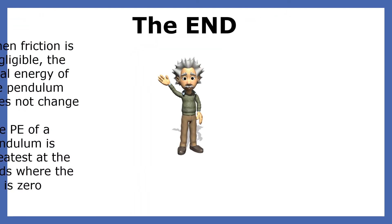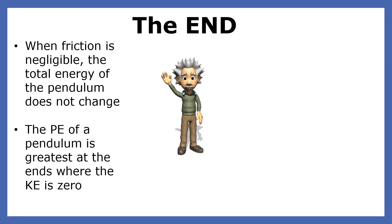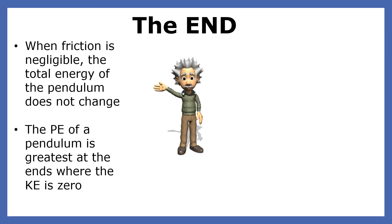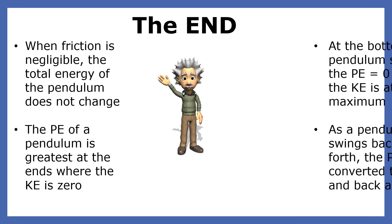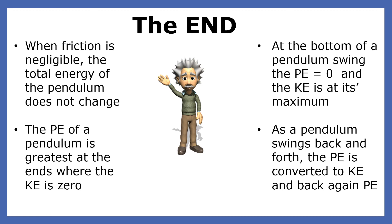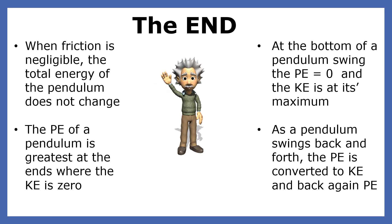Let's review what we've learned about the energy changes in a pendulum. When friction is negligible, the total energy of a pendulum does not change. The potential energy of a pendulum is greatest at the ends, where the kinetic energy is 0. At the bottom of a pendulum swing, the potential energy is 0 and the kinetic energy is at its maximum. As a pendulum swings back and forth, the potential energy is converted to kinetic energy and back again to potential.